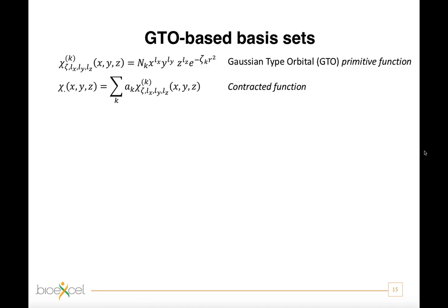If you use pseudopotentials, as you do in the practicals by employing a GPW scheme, that is a Gaussian and plane waves approach, the choice of the localized basis set has to be made in combination with the specific chosen pseudopotential class. In the case of the GTH pseudopotential, CP2K offers many possible basis sets among which to choose.